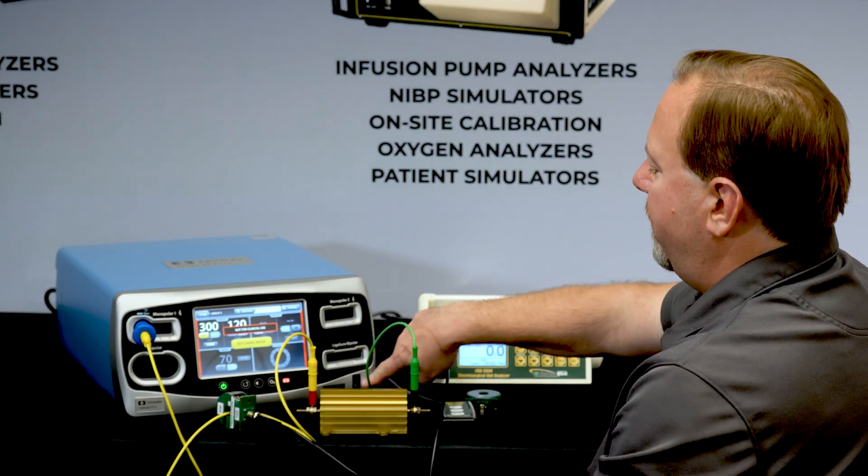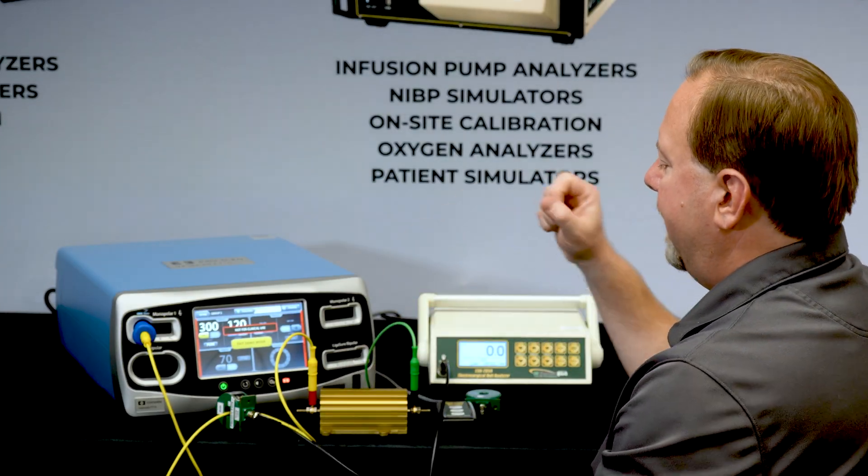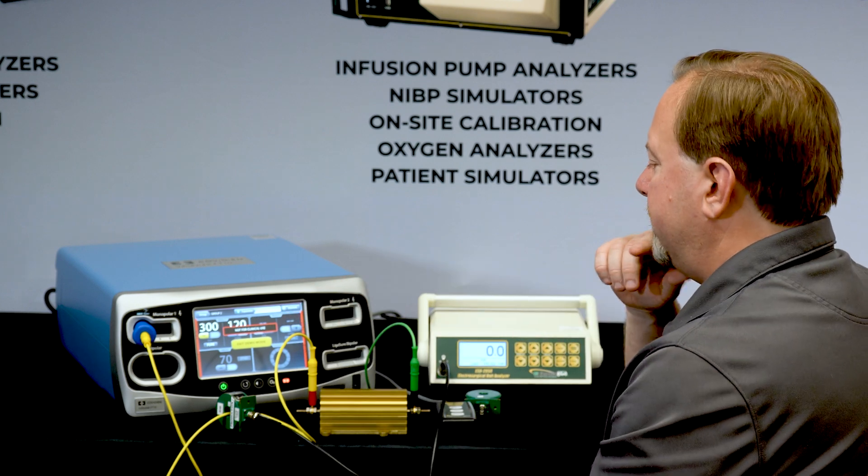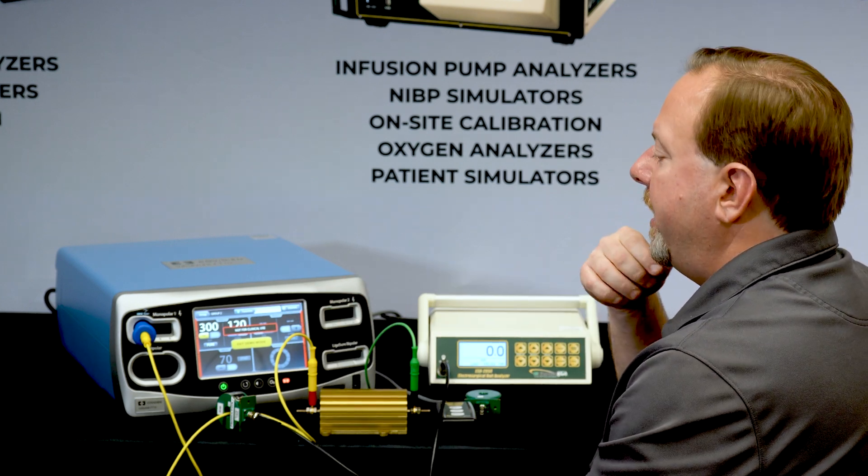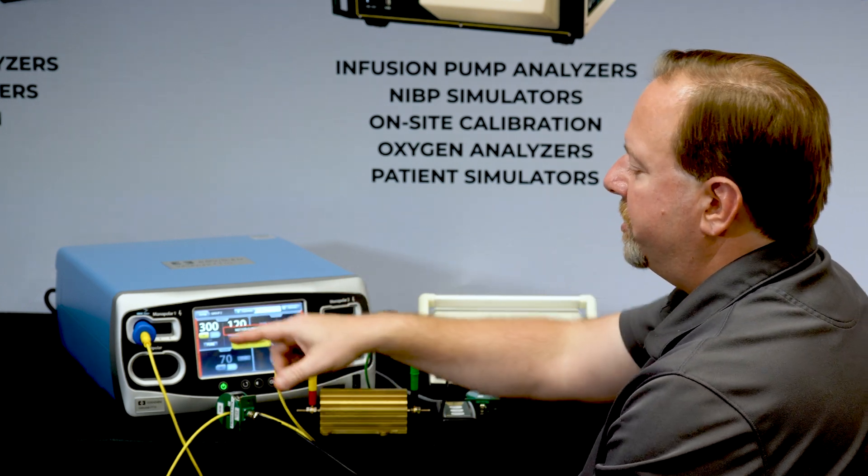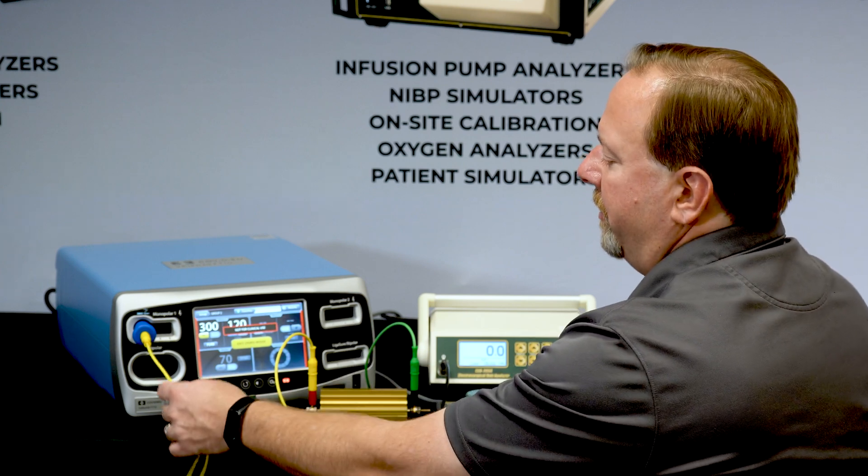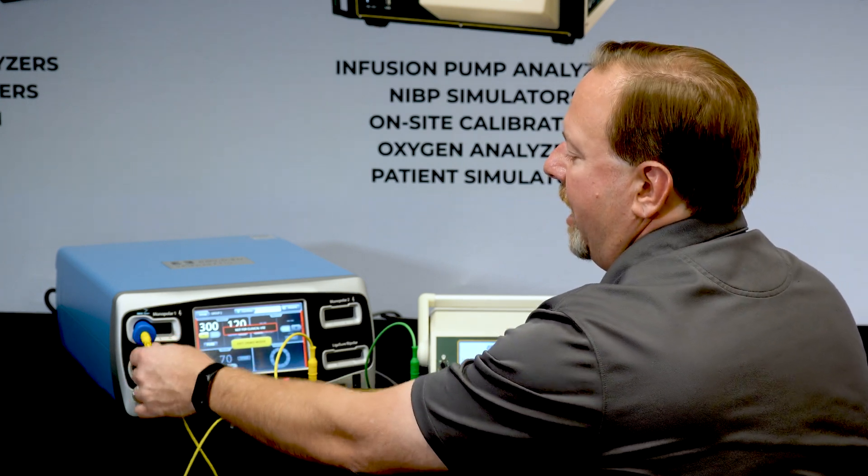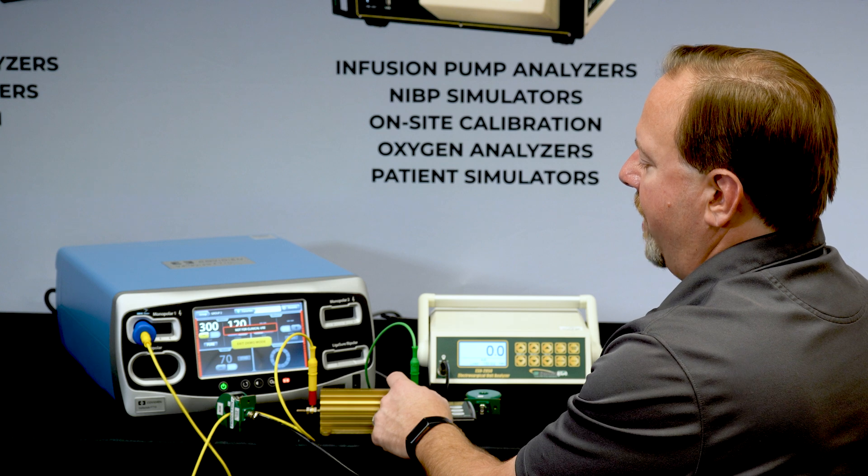So now we have our connections. Notice we don't have anything to the REM port. That's okay because we're in demo mode. It'll still let me trigger the generator. And what we're doing is we're measuring the amount of current coming from the output port to earth ground.